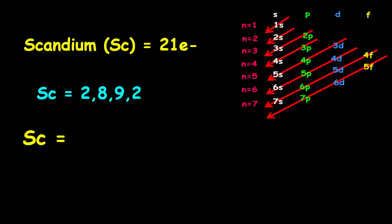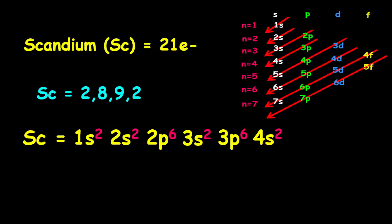For the orbital filling electron configuration, we have 1s2, followed by 2s2, then we have 2p6, followed by 3s2, then we have 3p6, then we have 4s2, and finally we have 3d1.